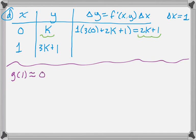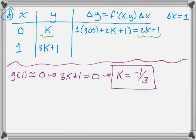And so g of 1 is approximately 0. That's given. Which means that 3k plus 1 must equal 0, because that's our approximation. So k is negative 1 third. That's our answer.